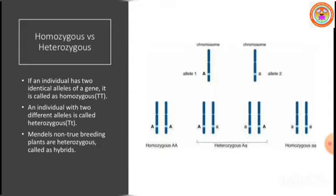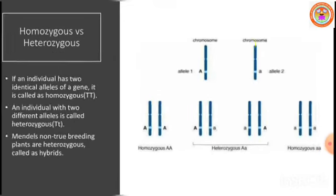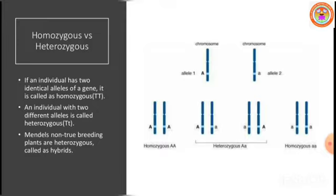An individual with different alleles is called heterozygous — 'hetero' meaning different zygote, a zygote which contains two different alleles, namely capital T and small t. Mendel's non-true breeding plants are called heterozygous. Heterozygous individuals are often called hybrids because they carry two different alleles from different parents.